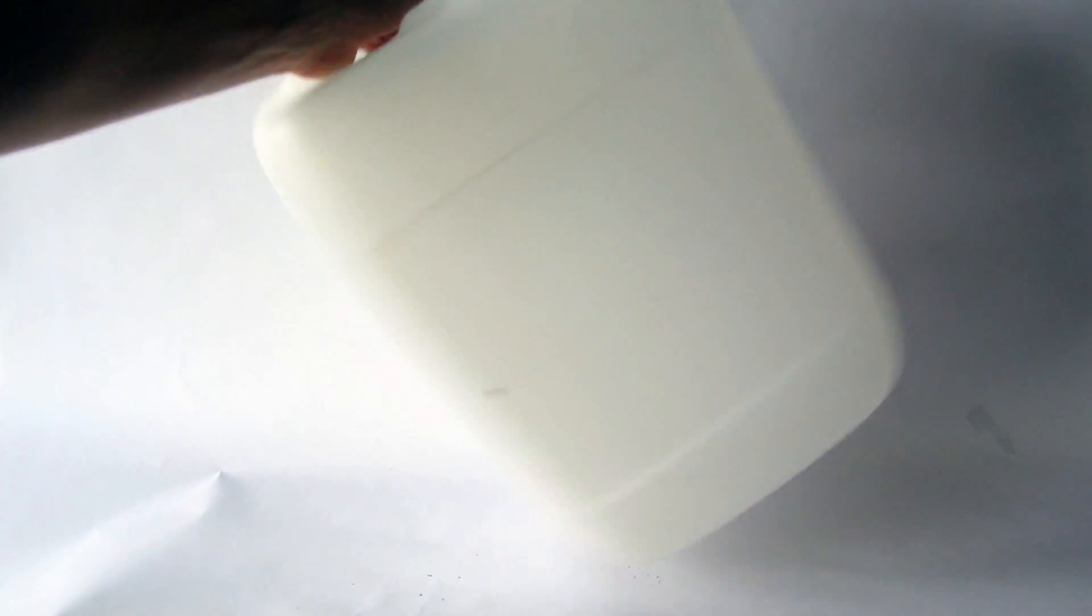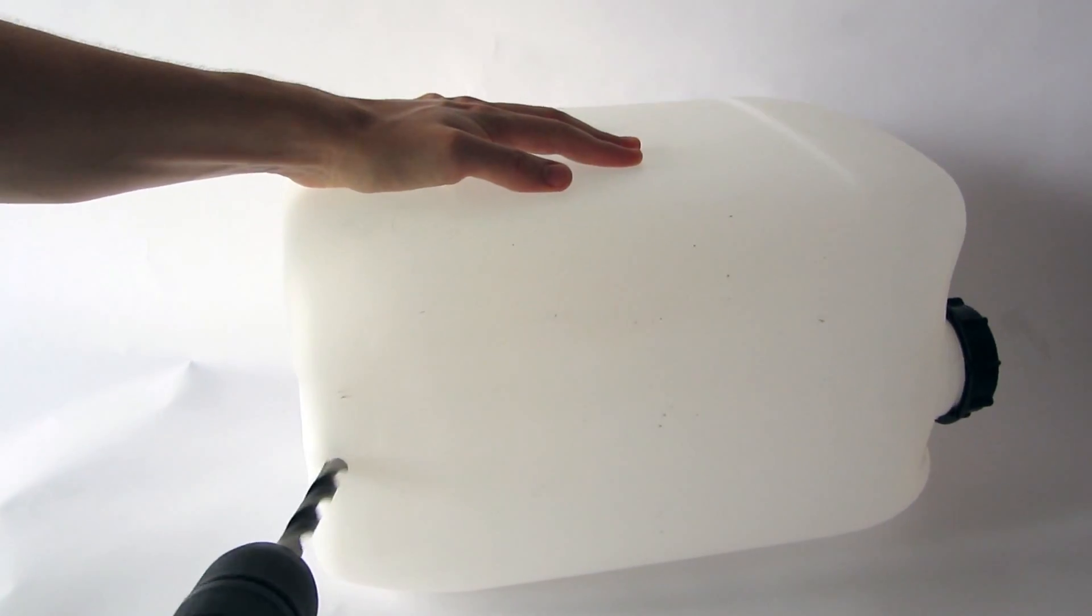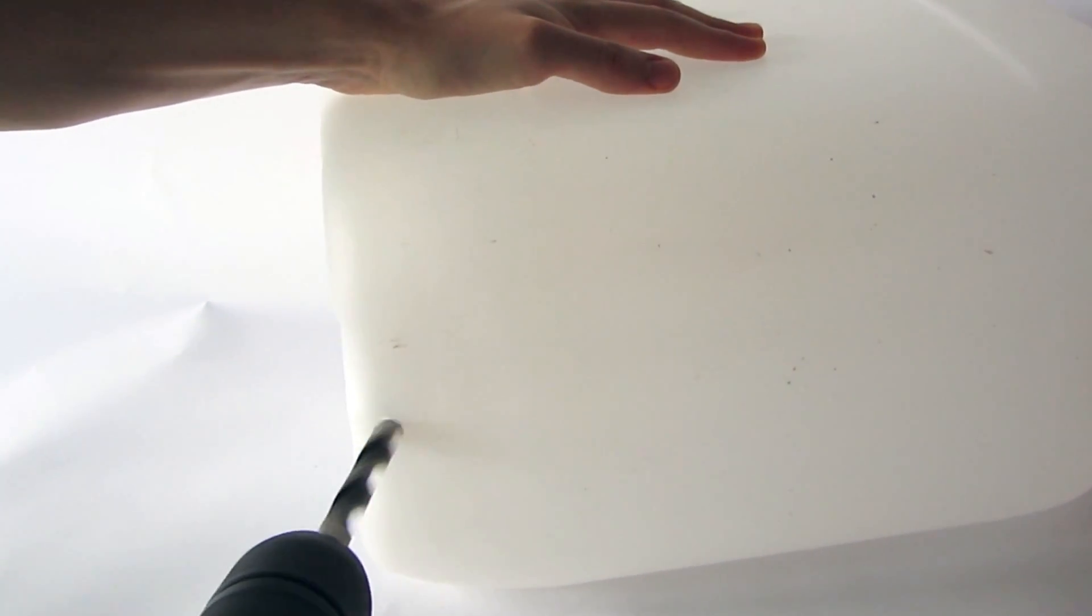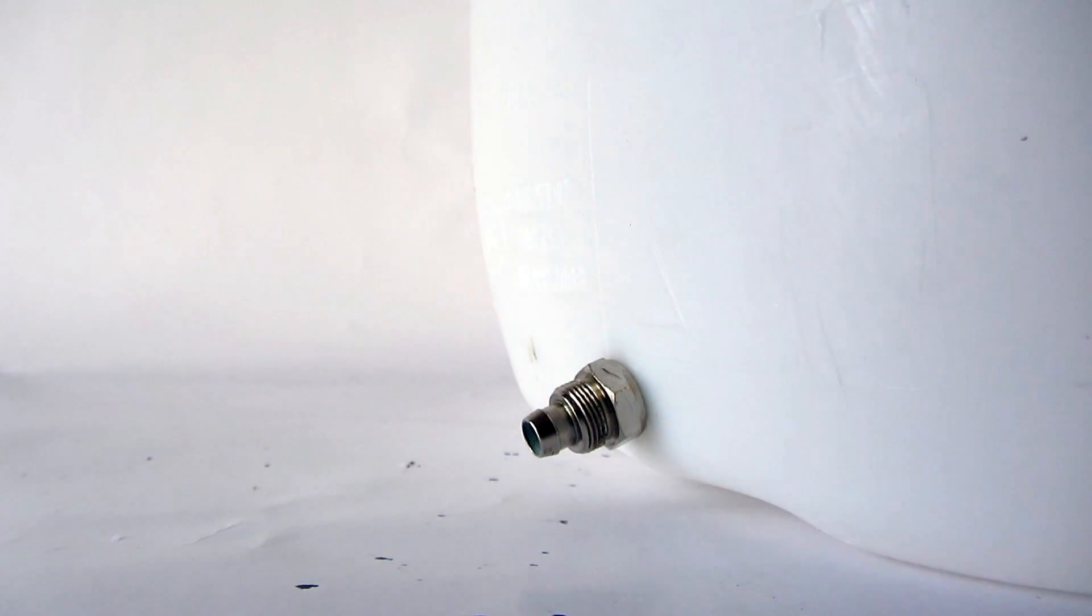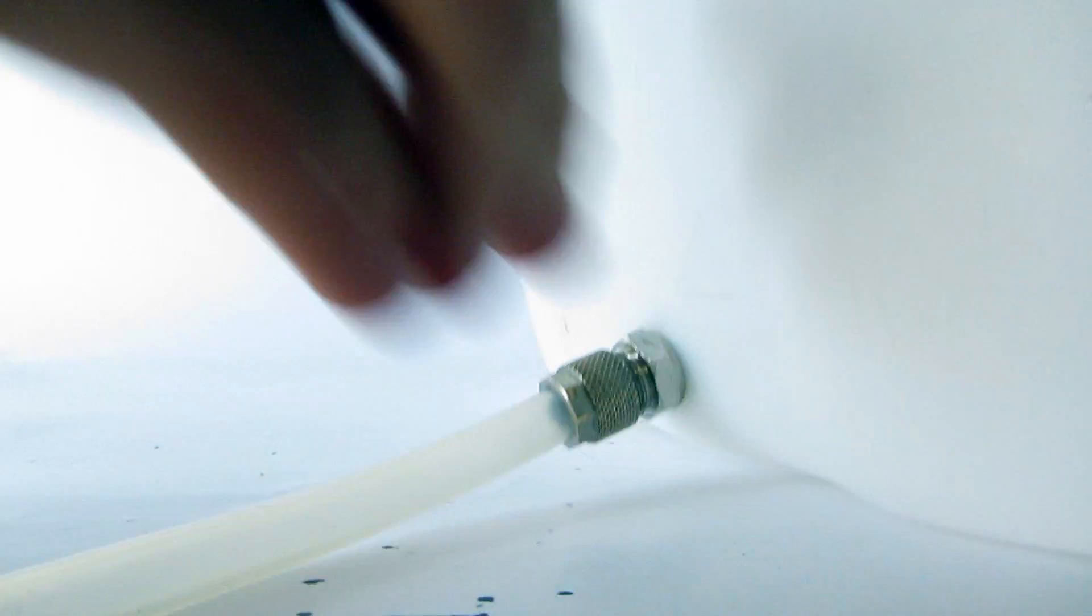It all started with a 20 liter water canister. I simply drilled a hole into the front side at the bottom. The next step was screwing in an adapter for some silicon tubing. The gravitational water pressure will do the rest.